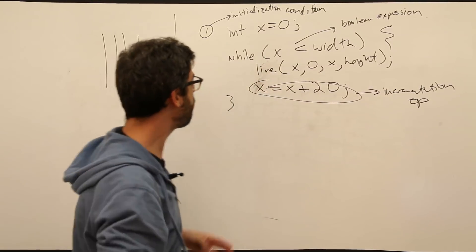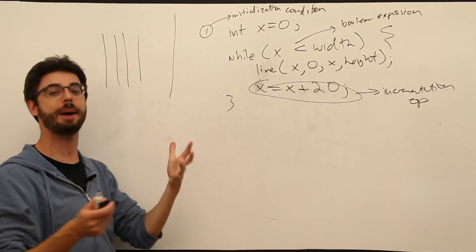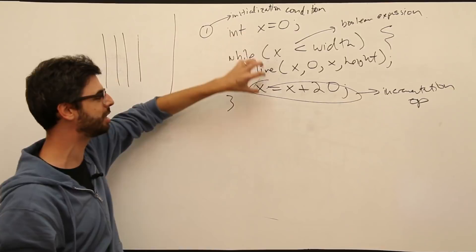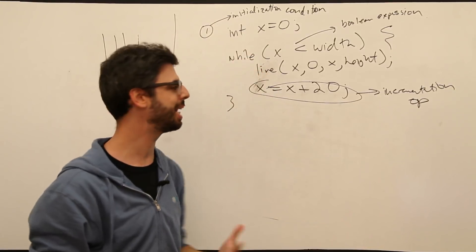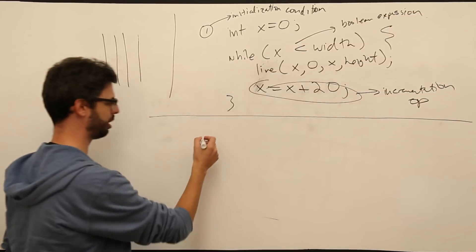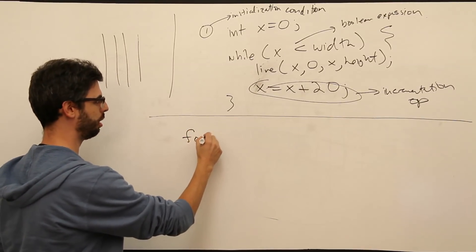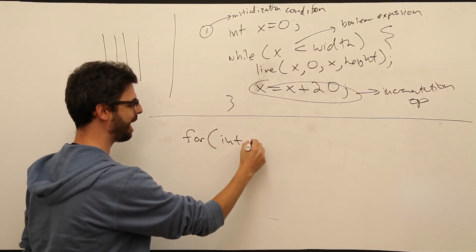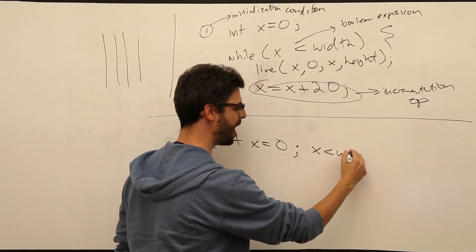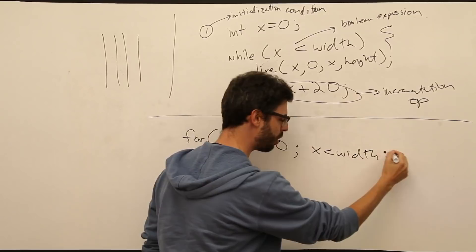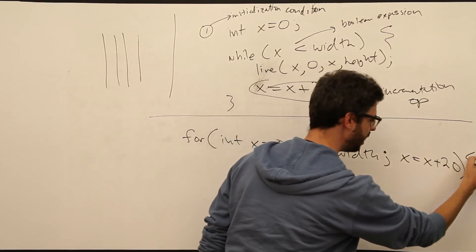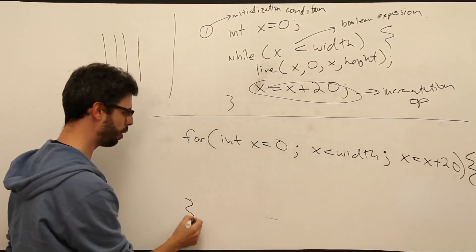A for loop takes these three common elements — something that you initialize, a Boolean expression that you test, and something that you do at the end of the loop — and allows you to write them all in one statement. So it looks like this: for int x equals 0, semicolon, x is less than width, semicolon, x equals x plus 20, end parentheses, curly bracket, close curly bracket.